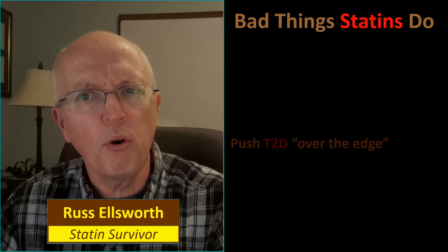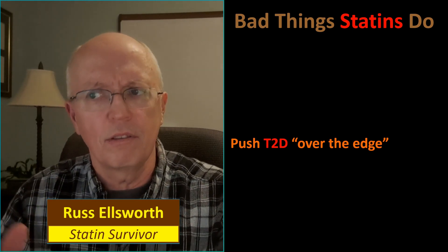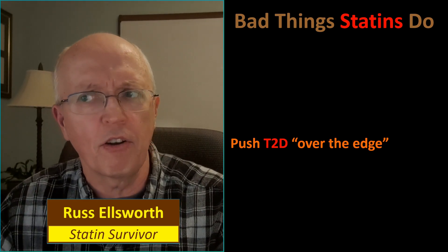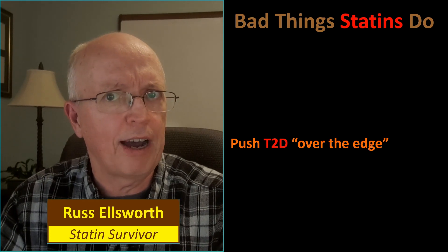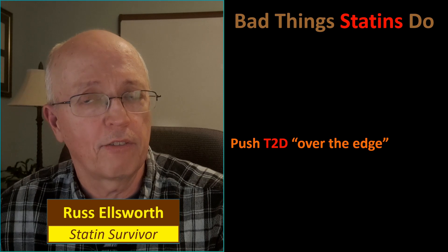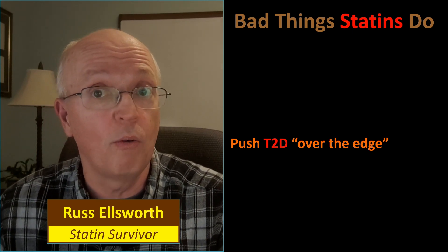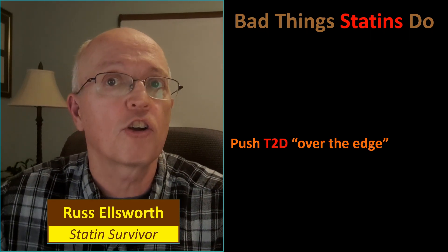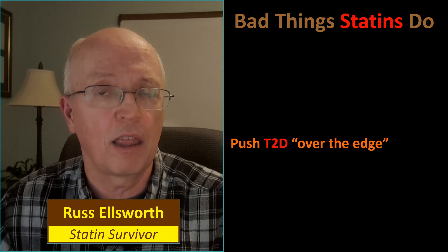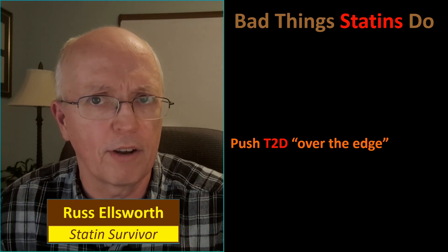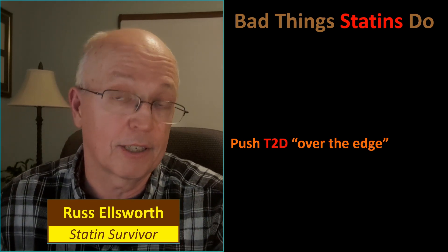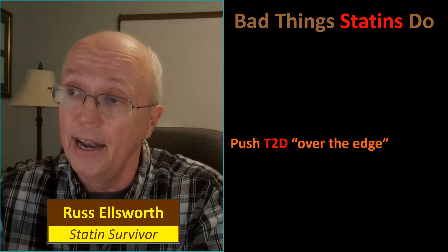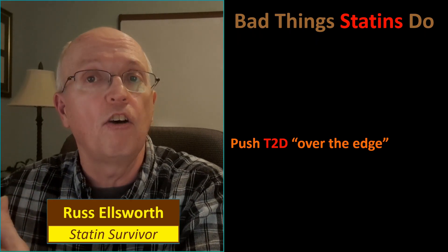More bad things that statins do: they push type 2 diabetes over the edge. I don't think statins create type 2 diabetes out of nowhere. If you have an HbA1c of 5.0, it's not going to make you a raging diabetic. But if you're on the edge — maybe your 6.3 becomes a 6.5 — now you're going to be officially diagnosed as having diabetes. It's treated like a step function: 6.4, you don't have diabetes; 6.5, you do. I think statins probably push a large segment of the population up a little bit, and that's enough to push some people over the edge and make them officially diabetic.